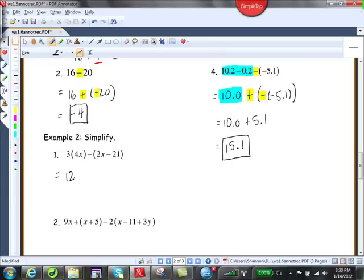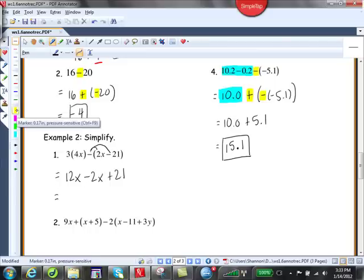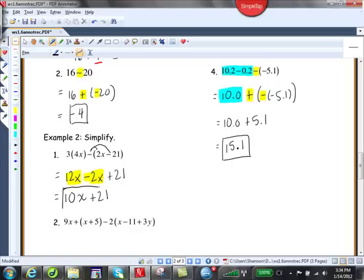We will get, so 3 times 4 gives us 12x. I'm going to distribute this minus through. So we will get minus 2x plus 21. So the minus distributed because you've got, do you see that minus a minus is positive. So now 12x minus 2x. So these here are like terms, right? So we're going to get 10x plus 21.